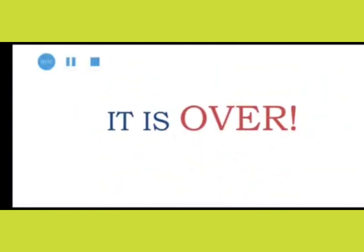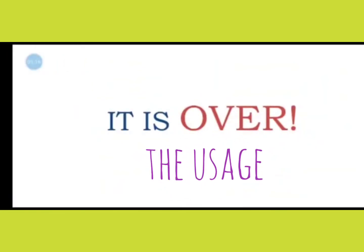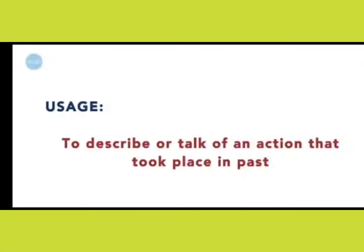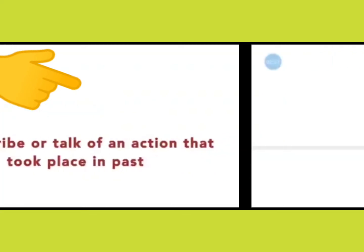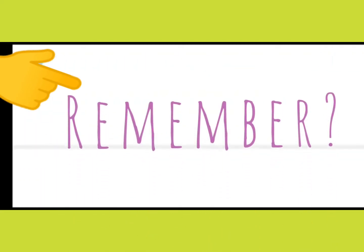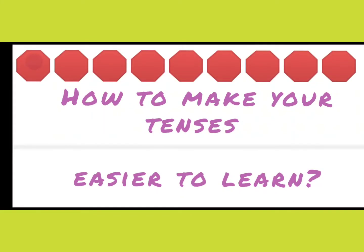That's the definition. Let's now understand the usage of the simple past tense. Where do we use simple past tense? We use it to describe any action that took place in the past. Now, do you remember when we did simple present tense? I told you how we should make our tenses easier to learn or understand.